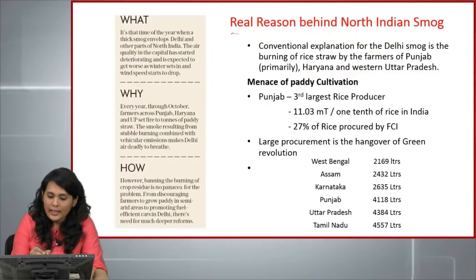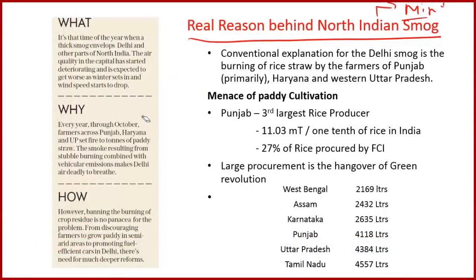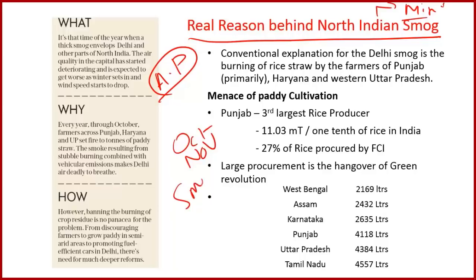The next article is 'Real Reason Behind North Indian Smog,' from Mint. Every year in October and November, Punjab, Haryana, and UP experience severe smog. The smoke from stubble burning, combined with vehicular and industrial pollution, makes the air completely polluted and deadly to breathe, a problem worsened in winter due to reduced wind speeds.